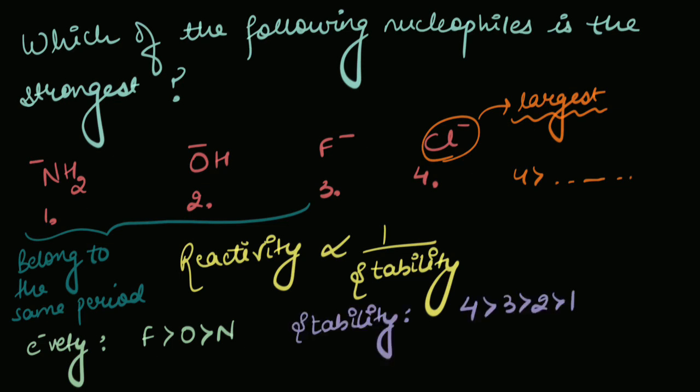So what would the stability look like? 4 is more stable than 3, which is more stable than 2, which is more stable than 1. And therefore, what would the reactivity look like?